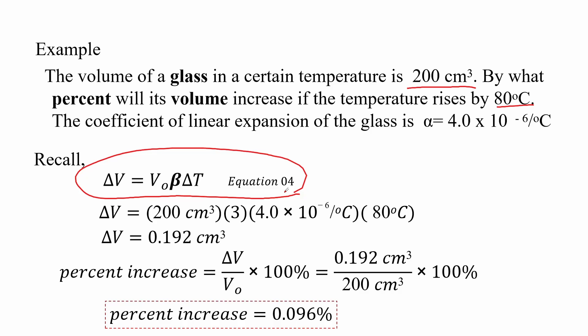We recall the equation for volume expansion and substitute the given values and solve for the change in volume, which is about 0.192 centimeter cubed. To get the percent increase, we take the ratio of the change in volume over the initial volume times 100 percent. We get that when the glass is heated, it expands to about 0.096 percent.